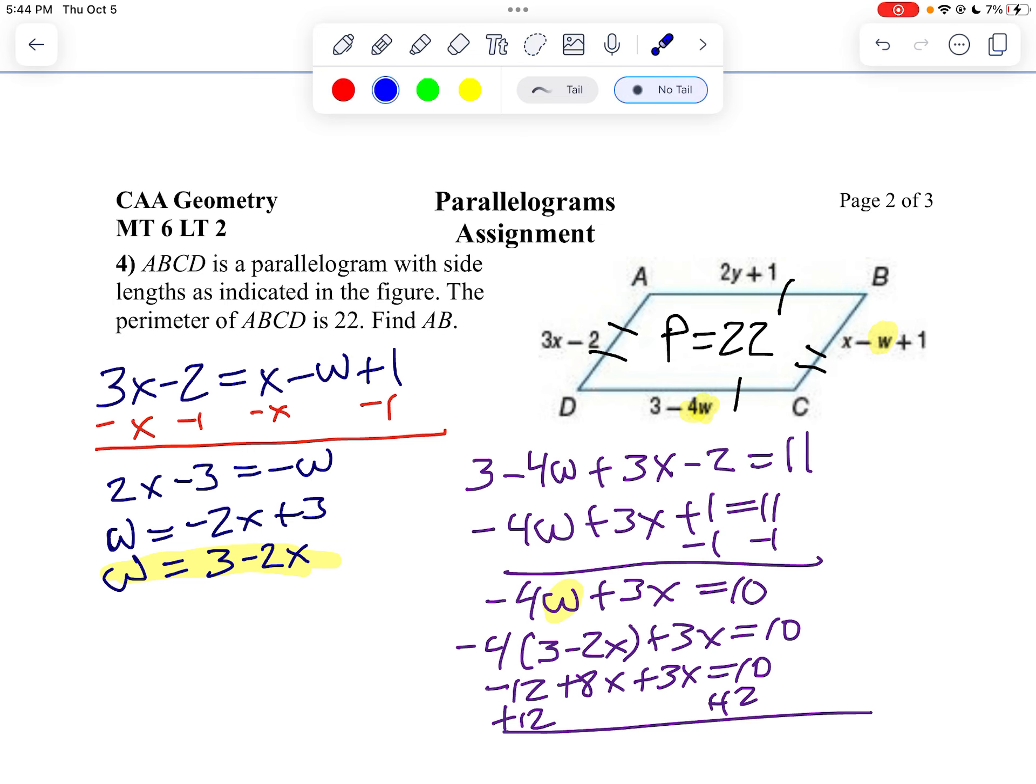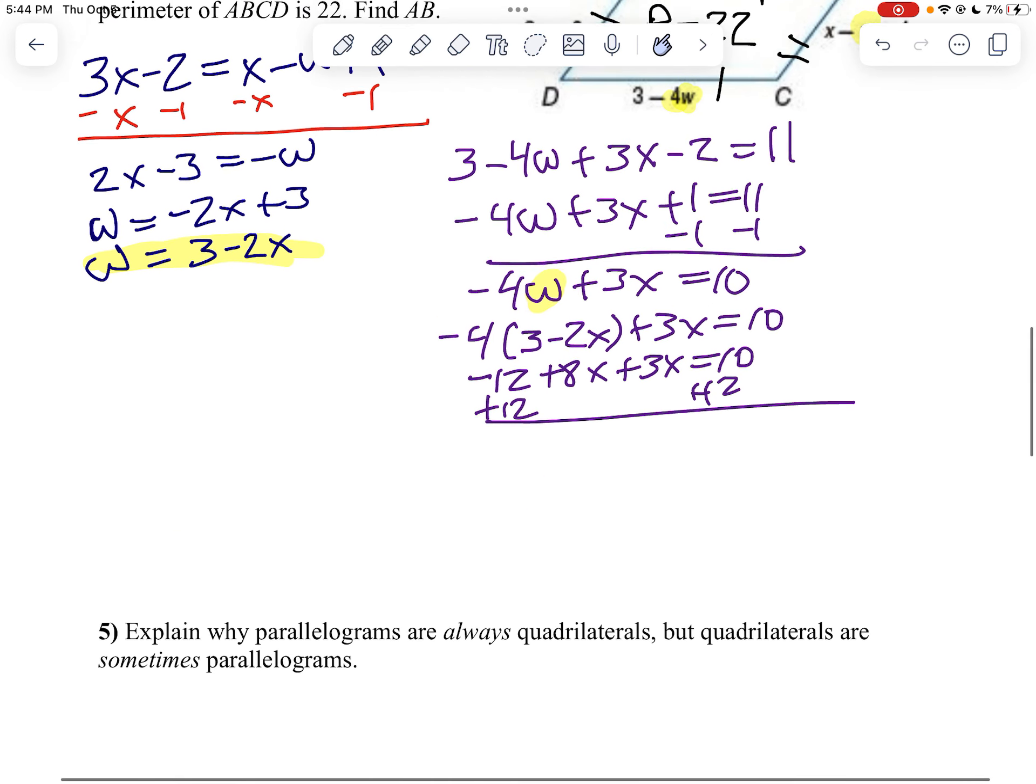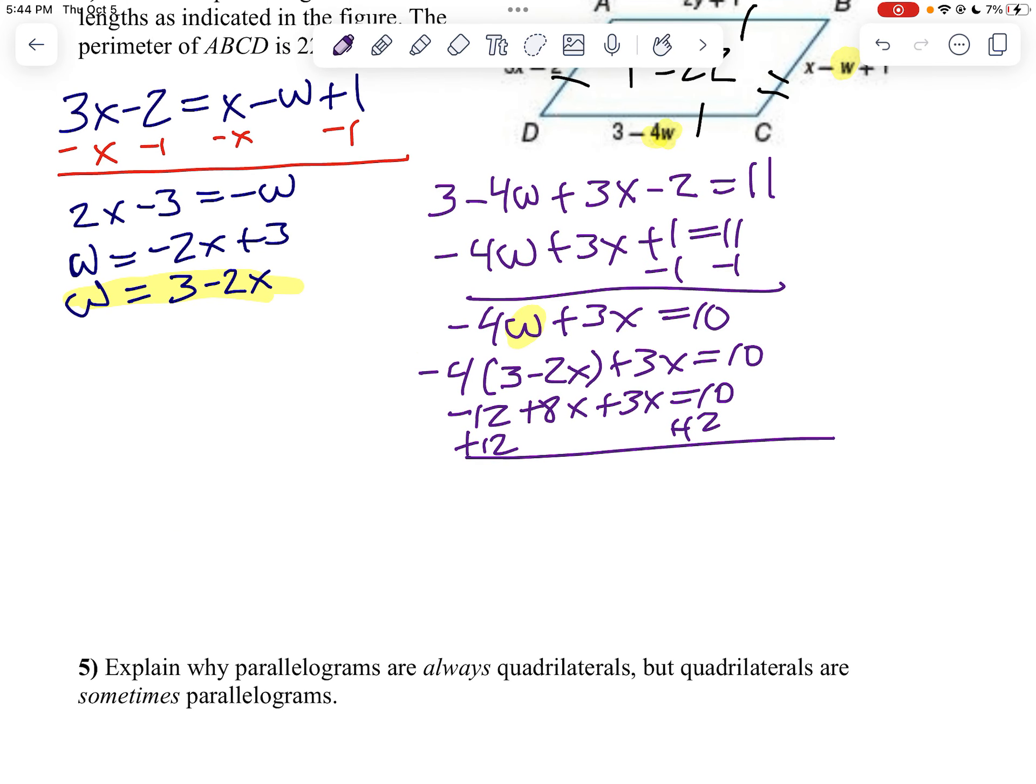And I'm sorry, I need to scroll down here because I need to show some work. Okay, so in other words, 11x equals 22. Or more specifically, 11 divided by 11, x equals 2.